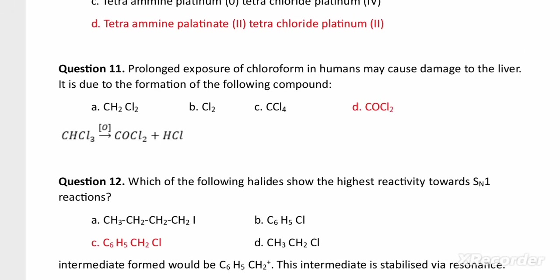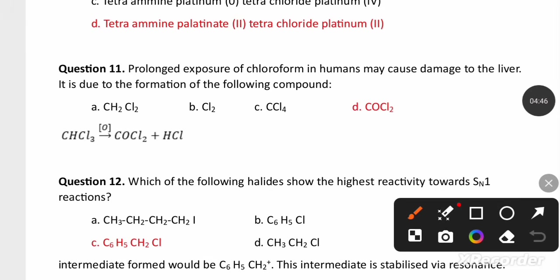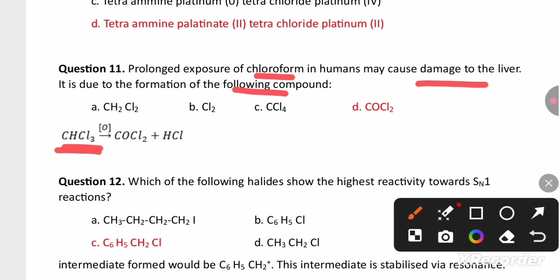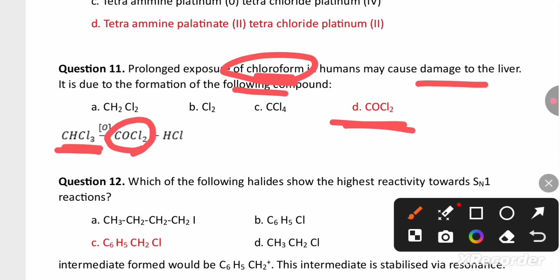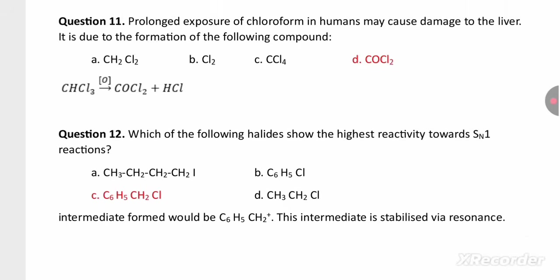A question from haloalkanes and haloarenes: prolonged exposure of chloroform in humans may cause damage to the liver. This is due to the formation of phosgene (carbonyl chloride, COCl2) gas. That is why we need to store chloroform in a dark-colored bottle.